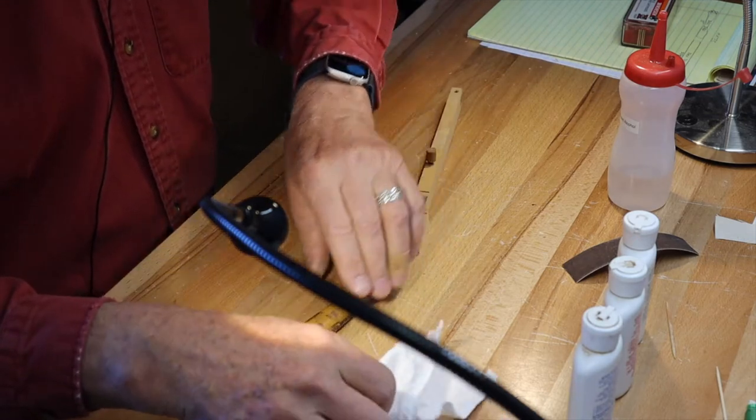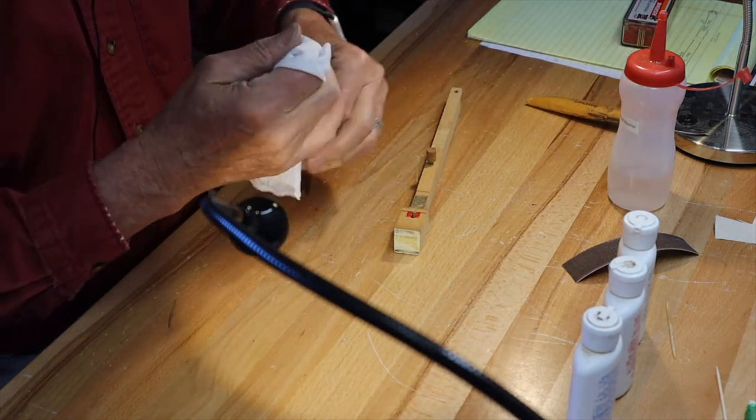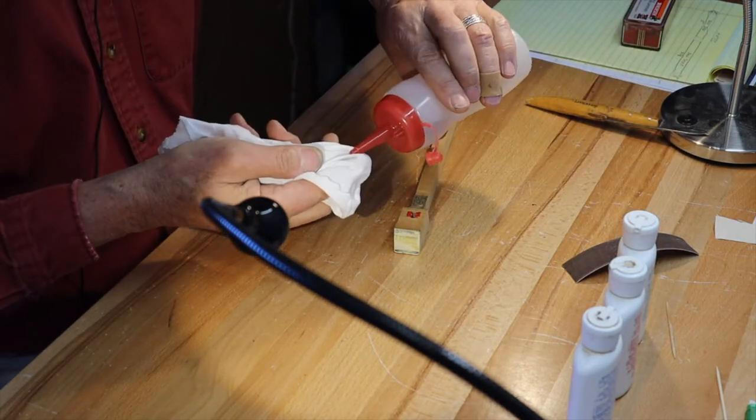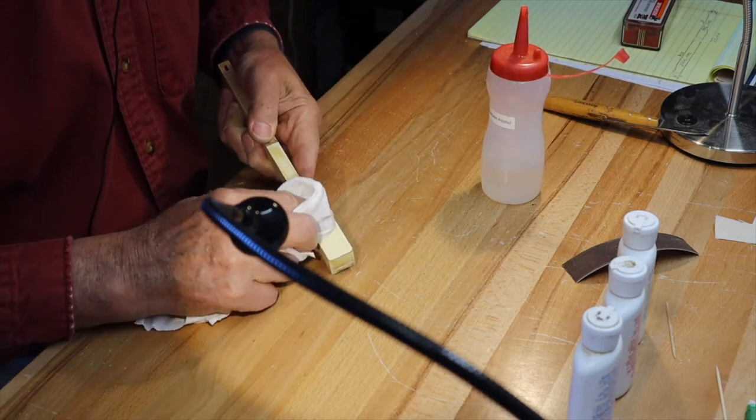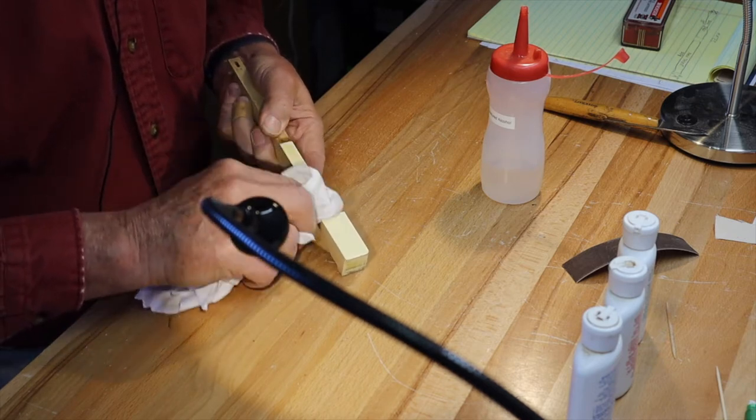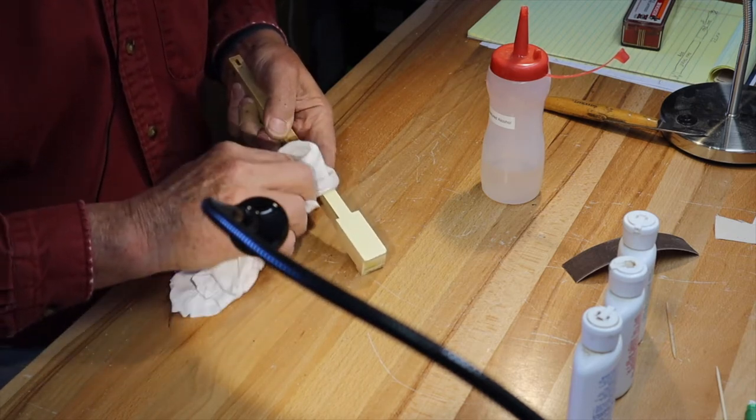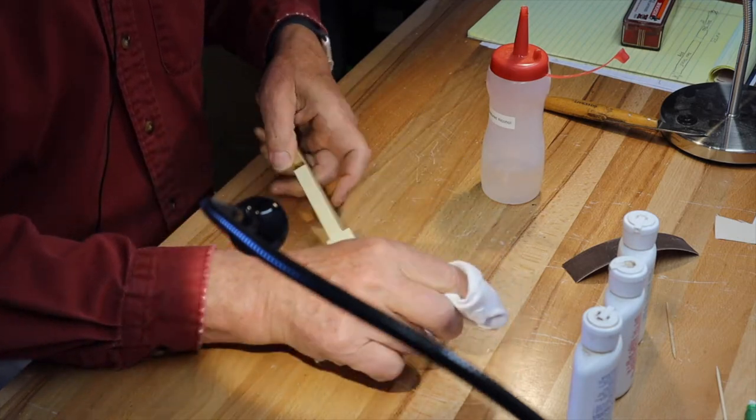Now I'm going to use denatured alcohol to get the rest of the shellac off. The denatured alcohol does not bother the top of the key caps, having tested that already. But the denatured alcohol will get the shellac off the top with a little bit of rubbing.